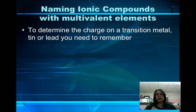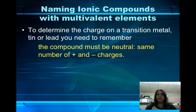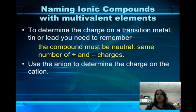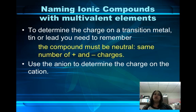The first thing we need to do is determine the charge on the transition metal, tin, or lead. You've got to remember this one thing: the compound must be neutral — the same number of positive and negative charges. The metal cation is always bonded to a nonmetal anion or a polyatomic anion that has a specific charge, and we can use that to determine the charge on the cation.